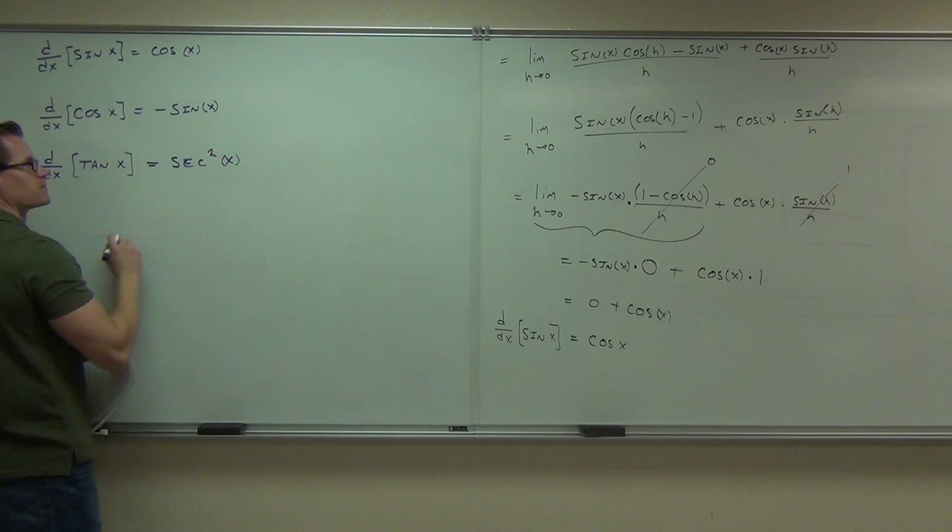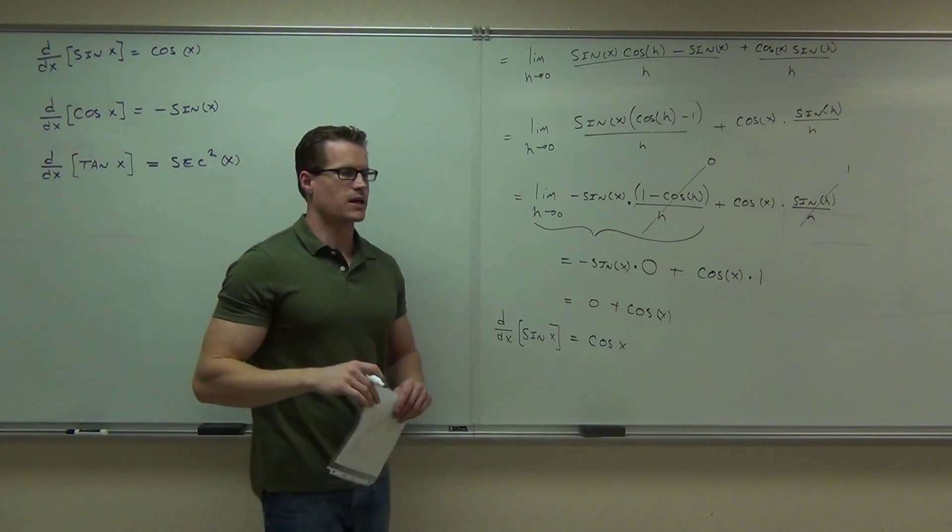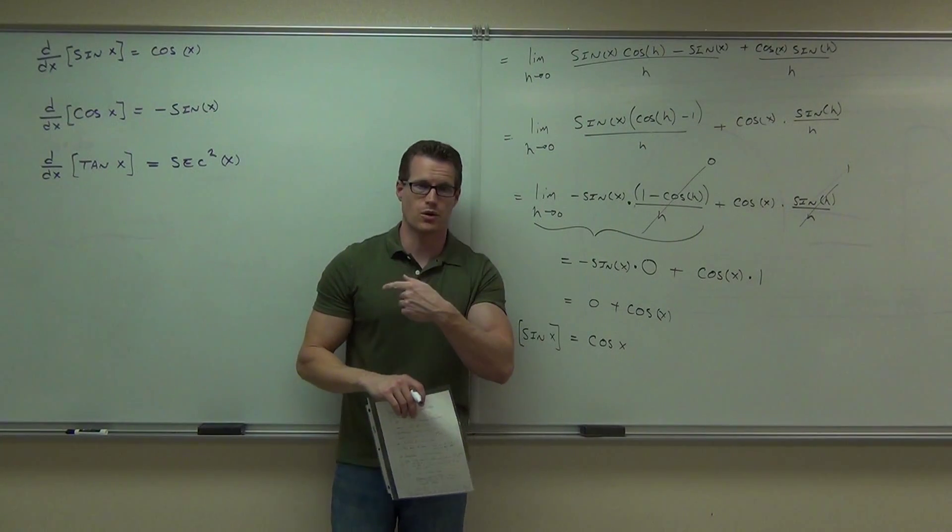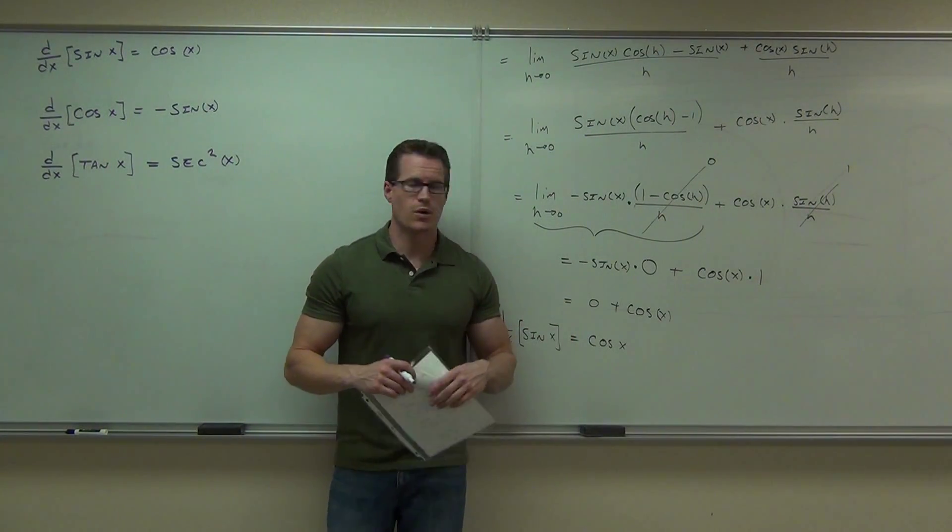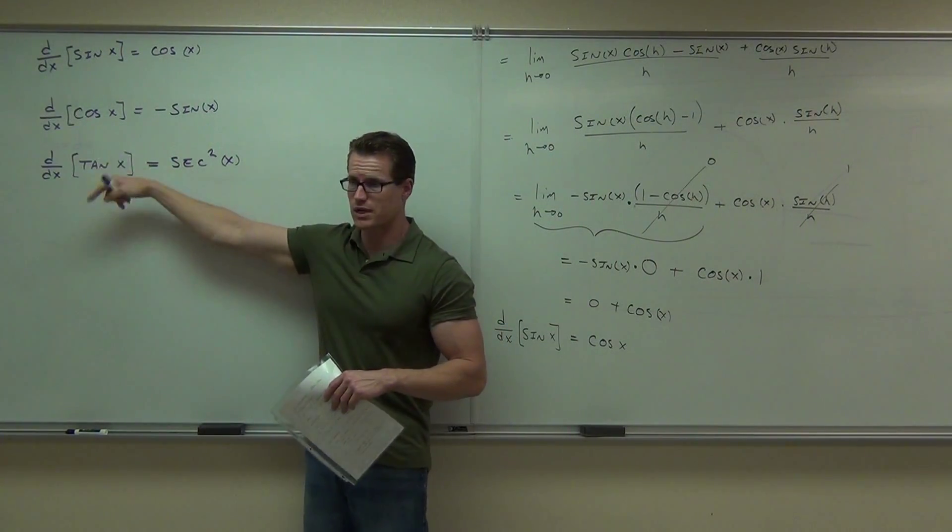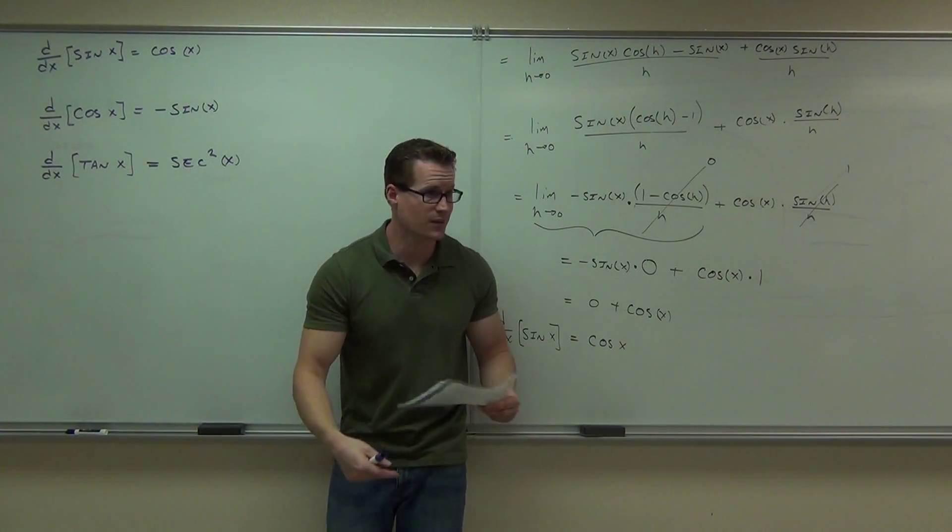Secant squared X. Again, if you want to see these - I don't know if they're proven in your book, but you can come and see me. I'll show you the quotient rule on your own. That might be an example for you to try later. Do the quotient rule on sine over cosine. It'll work out eventually to just secant squared X. It might take a little bit of trigonometry to get there, but it will.